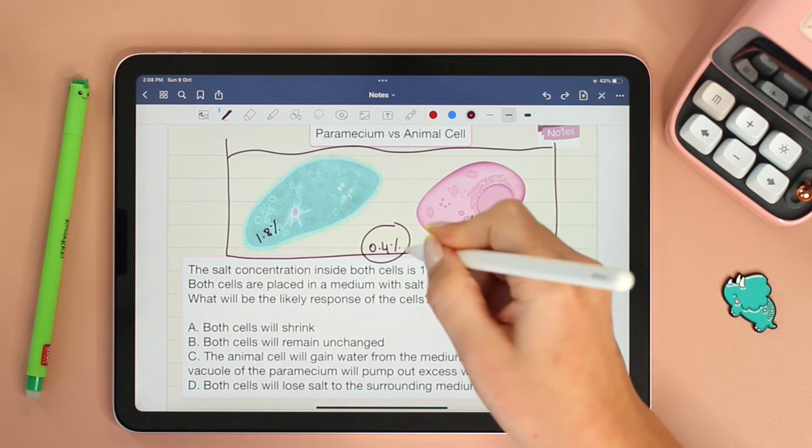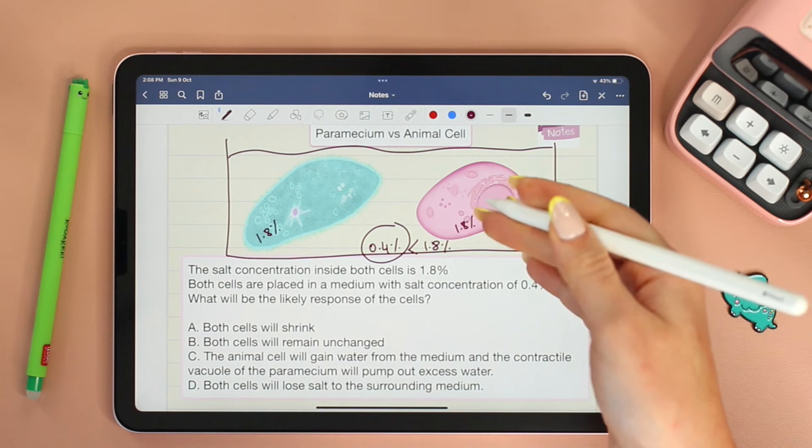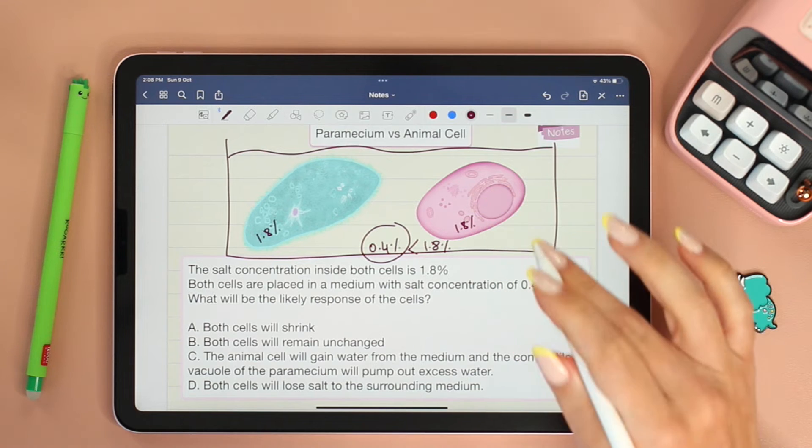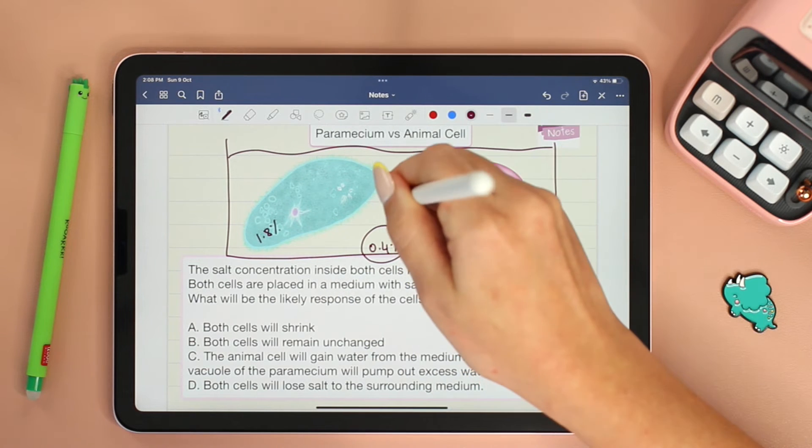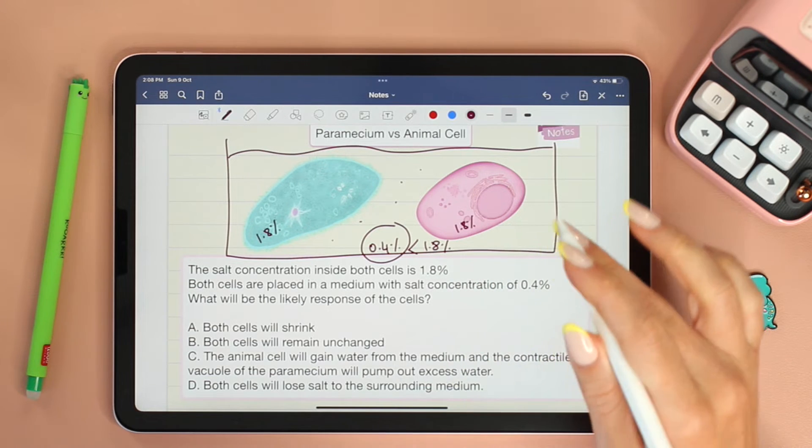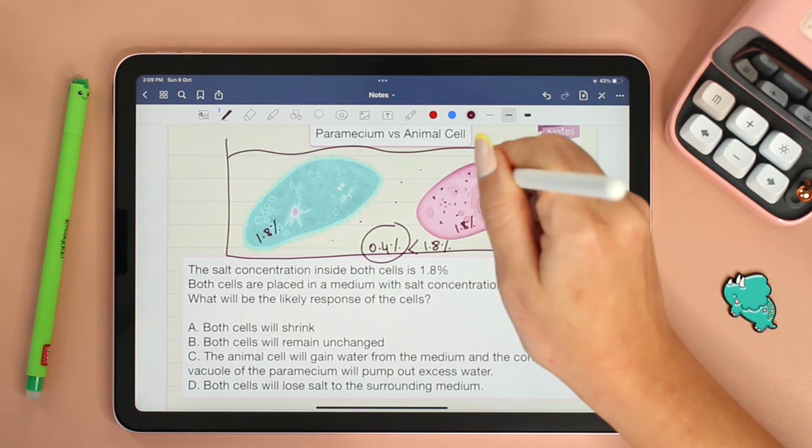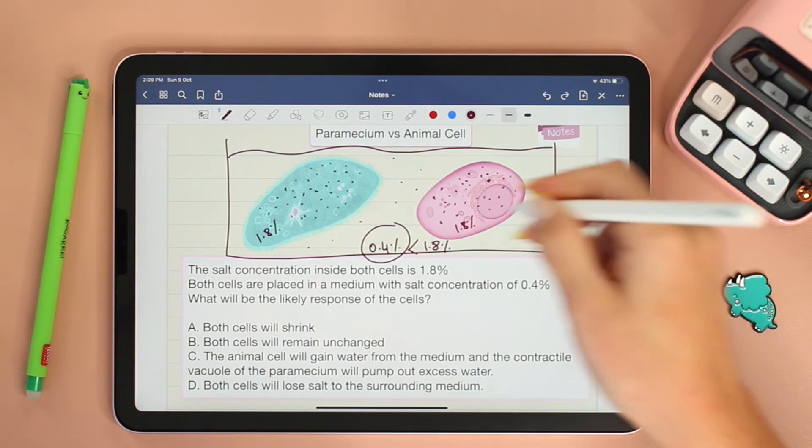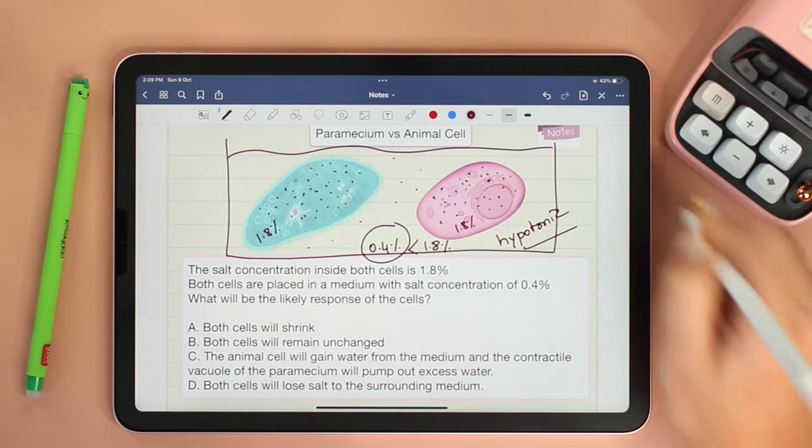0.4% is clearly much less than 1.8%. This means there are much less solutes in the medium. So if these dots represent the solutes, there's much less of them in the medium compared to inside the cells. This means that the cells are placed in hypotonic solution.